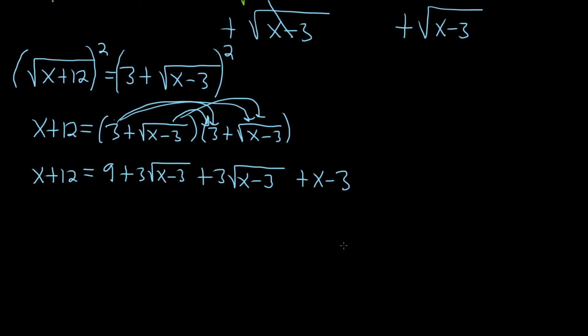Let's clean things up. We have some like terms on the right. x plus 12 equals, the 9 and the minus 3 give us a positive 6. In the middle, we have 3 of these plus 3 of these, so 6 times the square root of x minus 3. And we still have the x, so plus x.